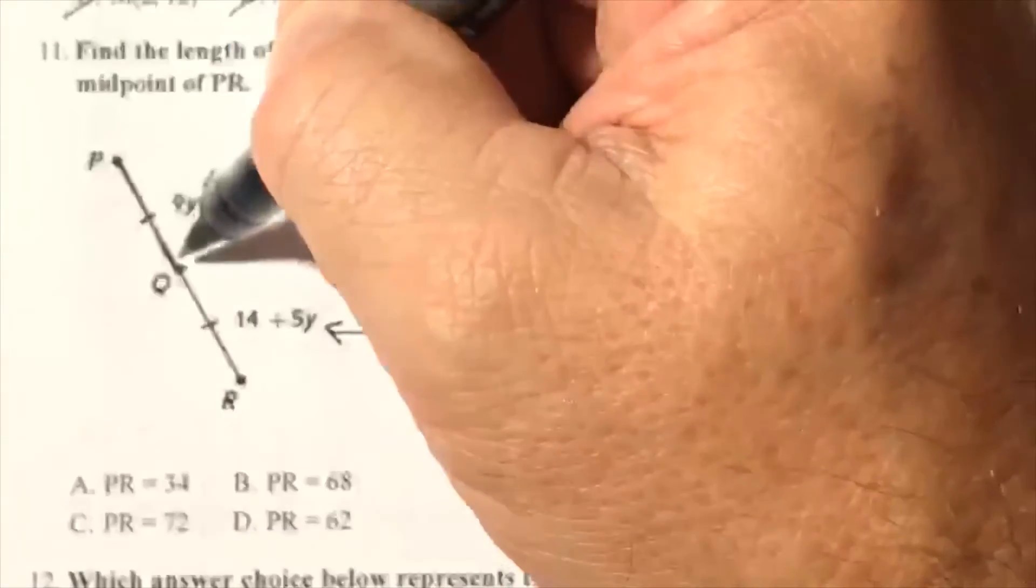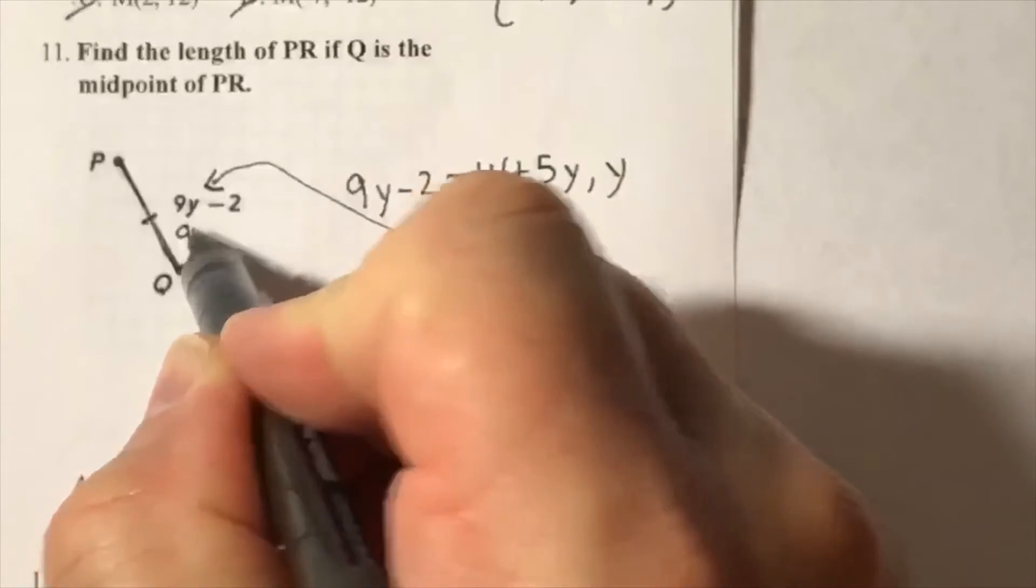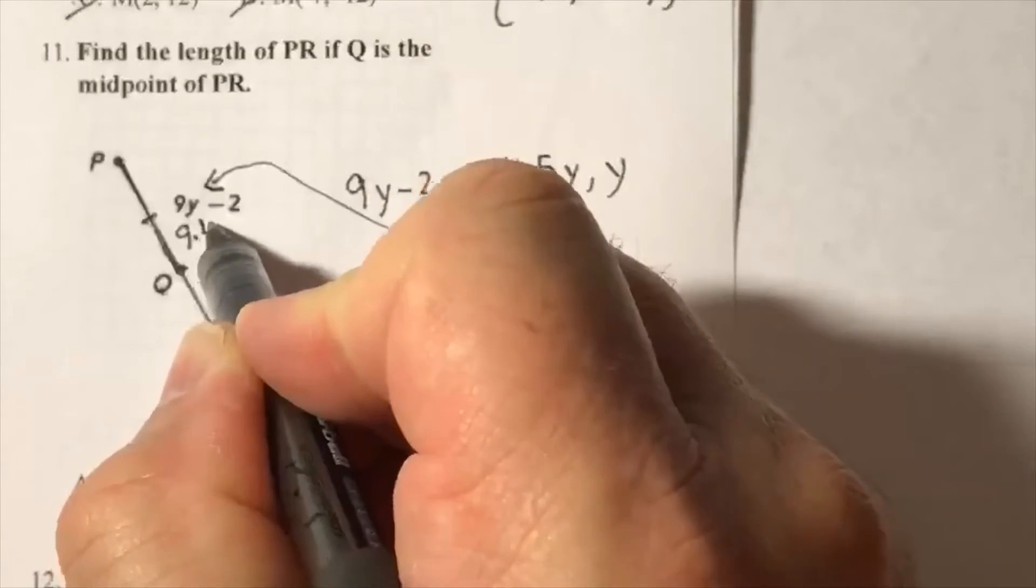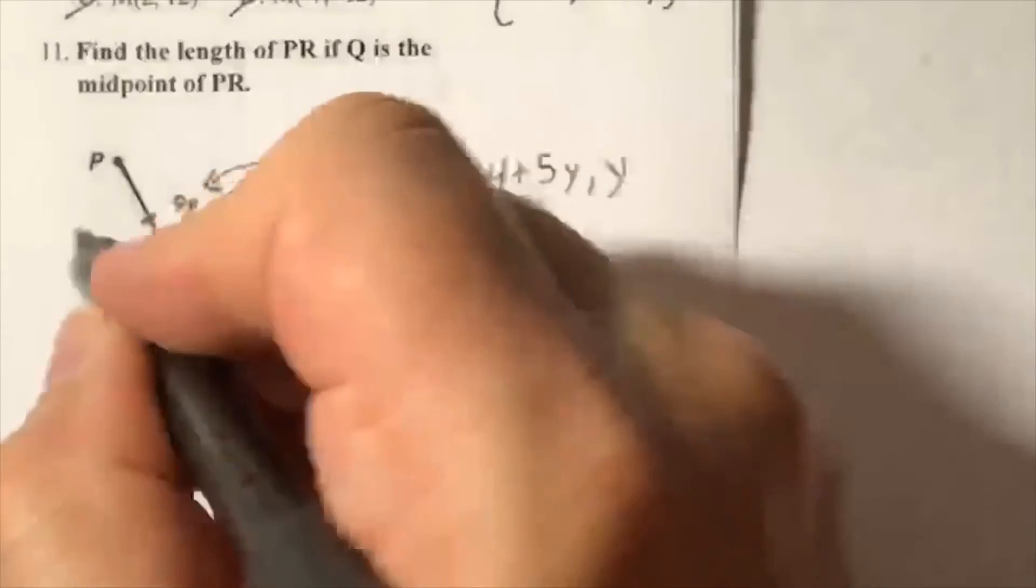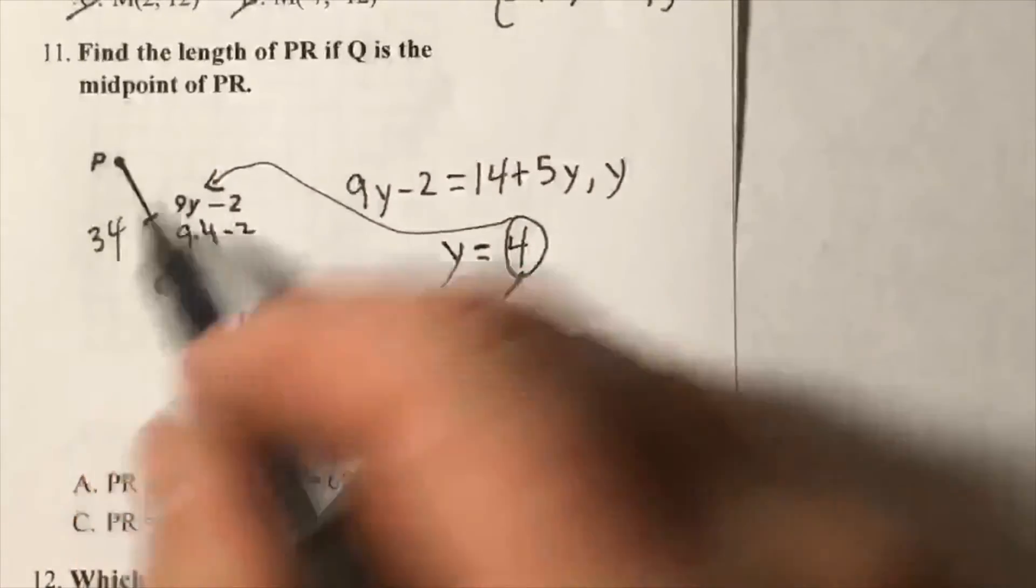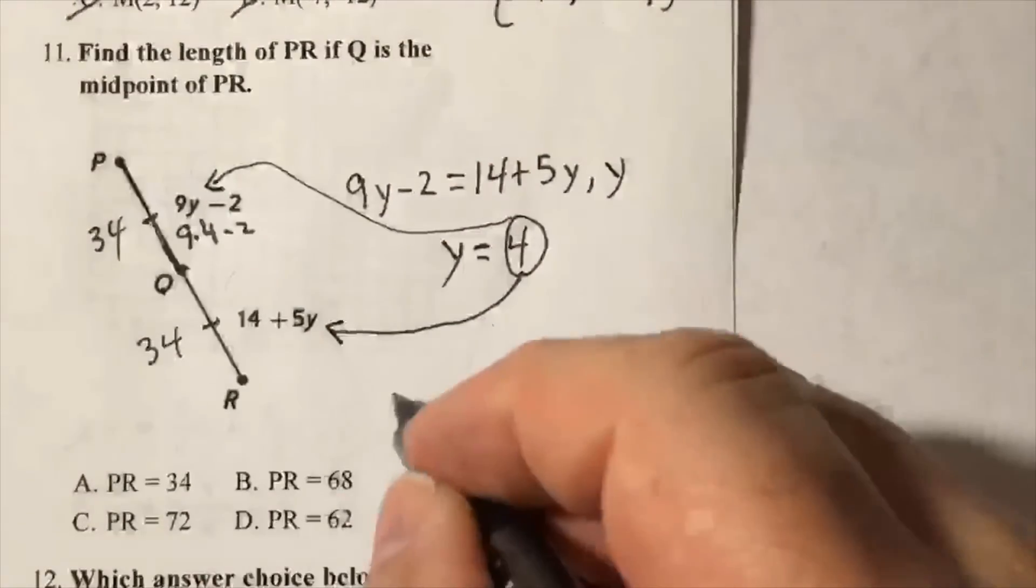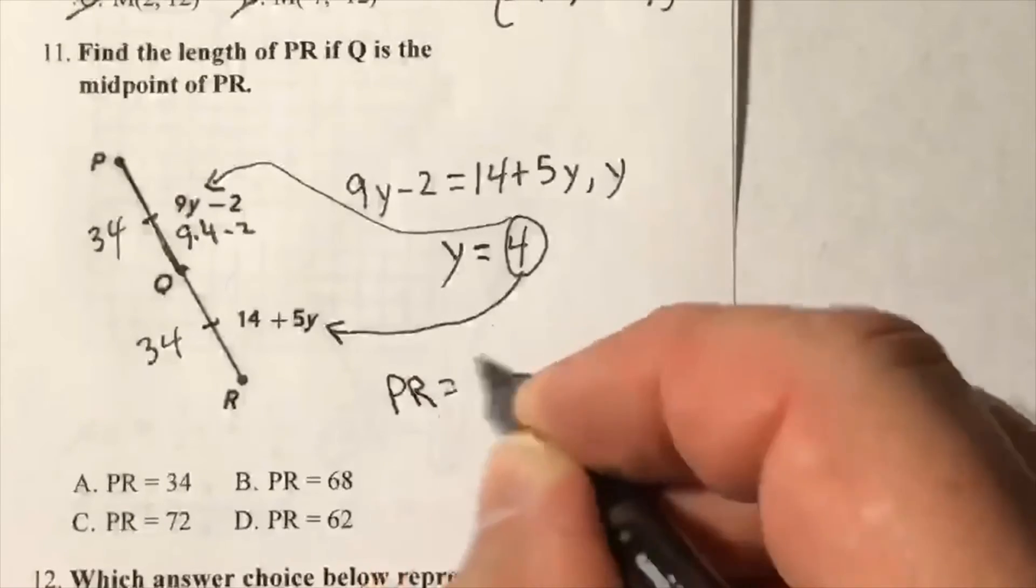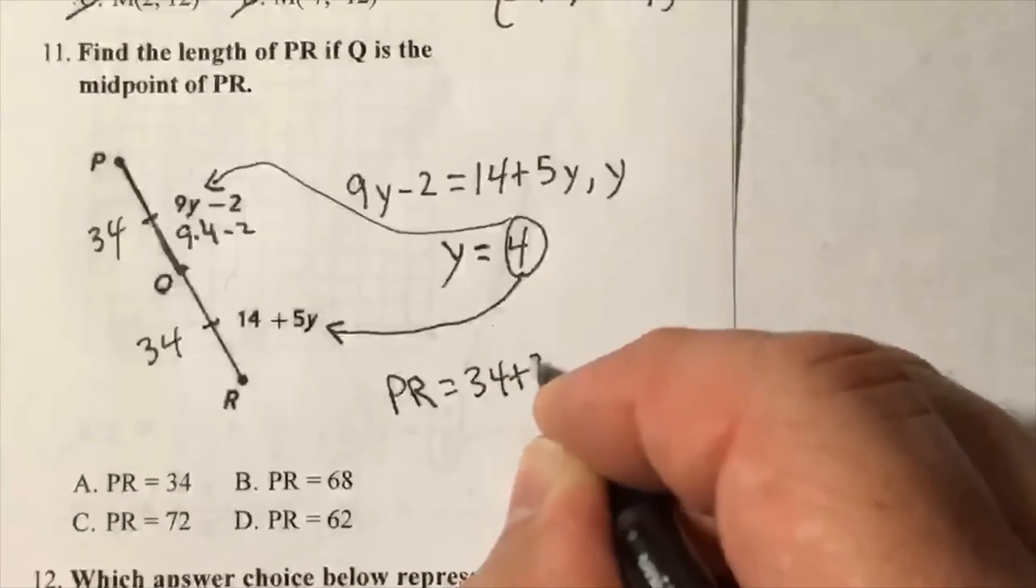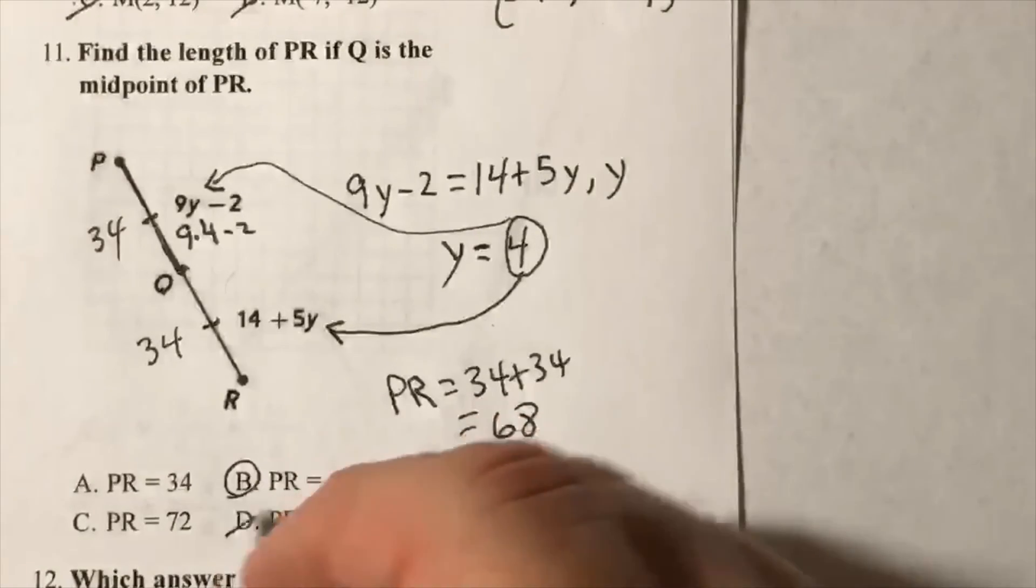from P to Q is nine times four. So nine times four minus two is 34. This has to be 34, they're equal, so PR is equal to 34 plus 34, that's equal to 68.